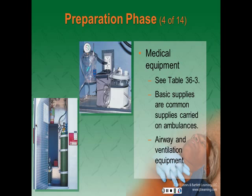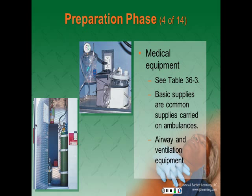As an EMT, you have access to a large variety of medical equipment and supplies listed in Table 36-3. Basic supplies carried on ambulances include disposable gloves and sharps containers, airway and ventilation equipment, basic wound care supplies, splinting supplies, childbirth supplies, an AED, patient transfer equipment, and medications.